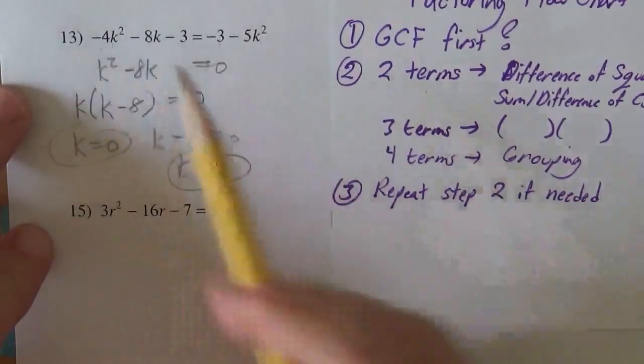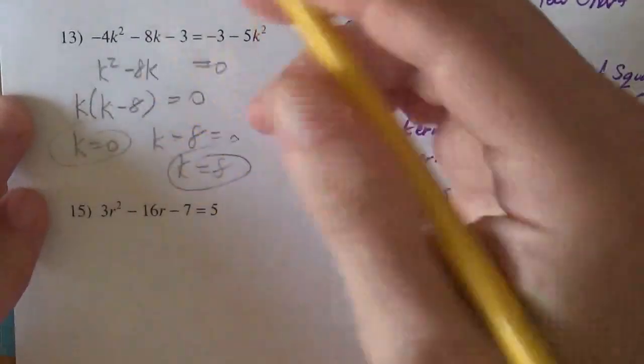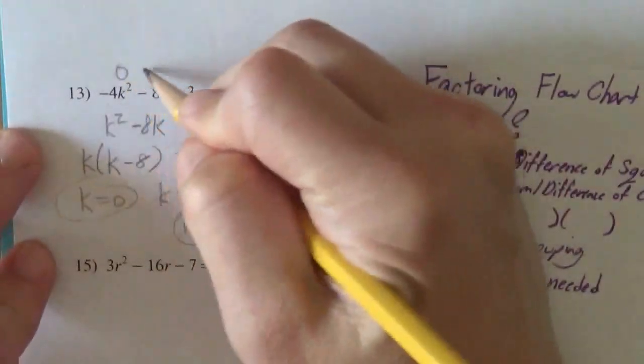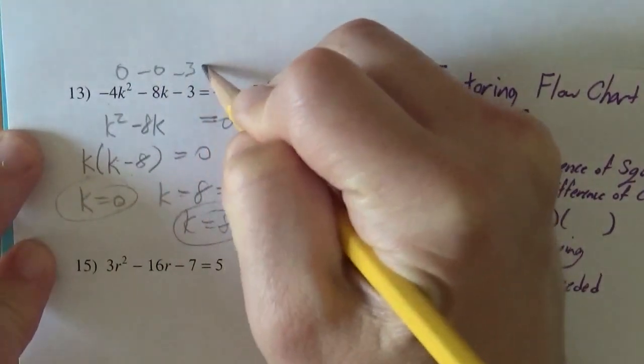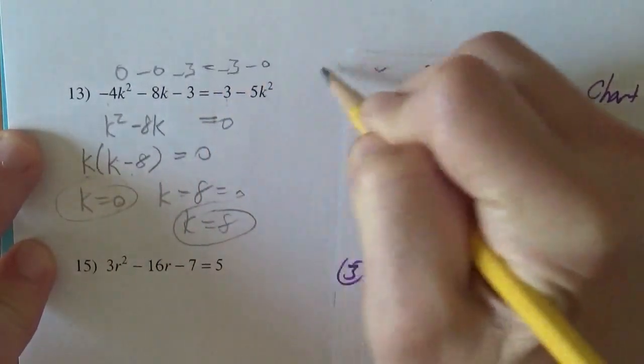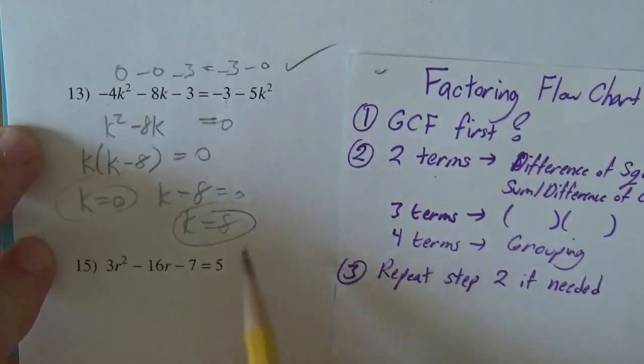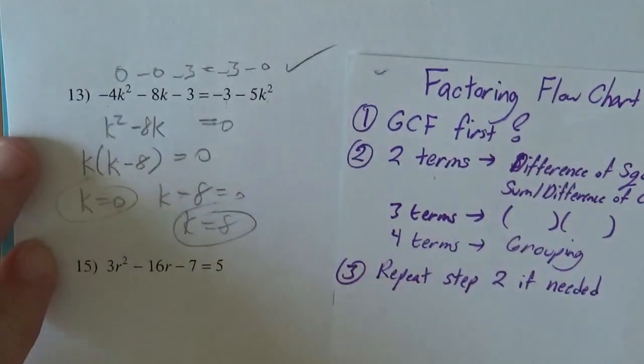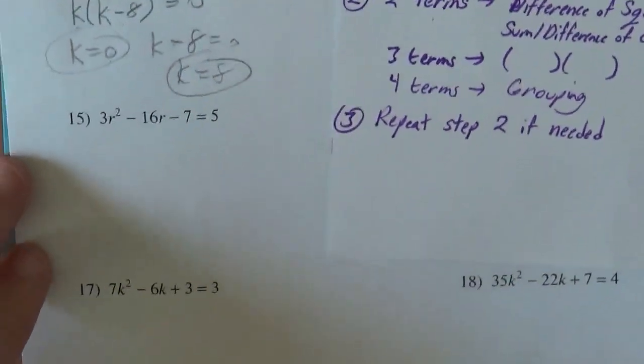You could test them all the way back into the beginning. If I put in the zero, this would be zero minus zero minus three, does that equal minus three minus zero? I think it does. And the eight should work as well.